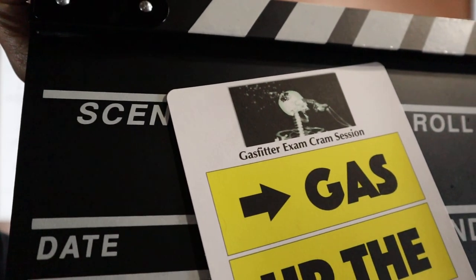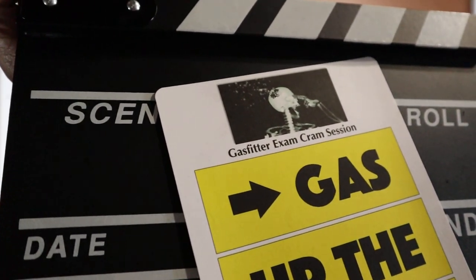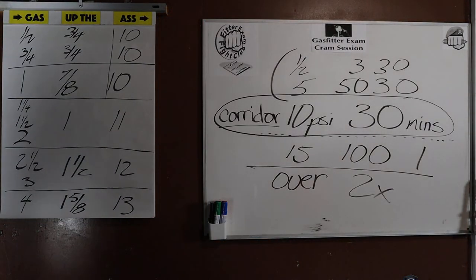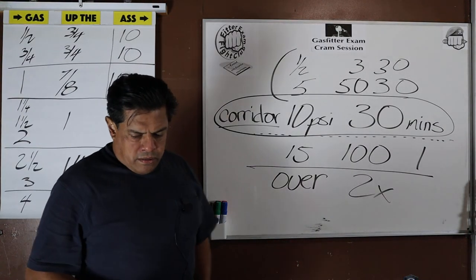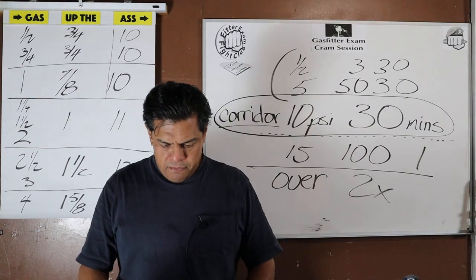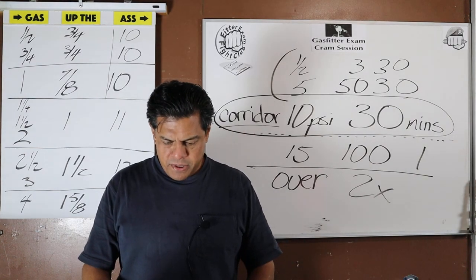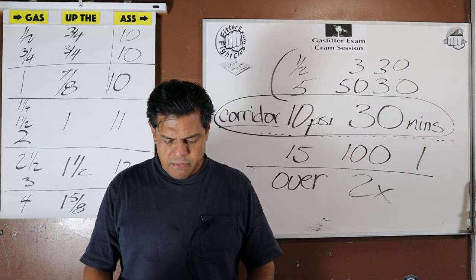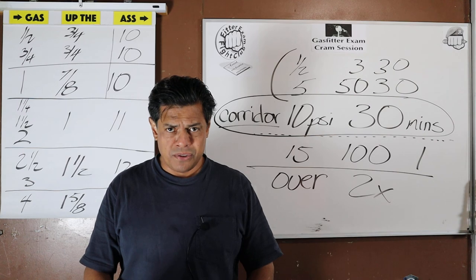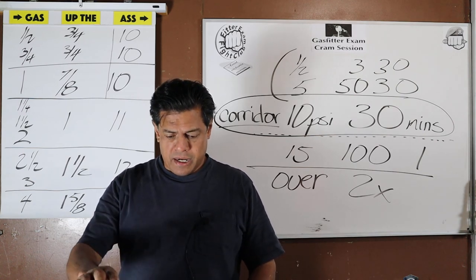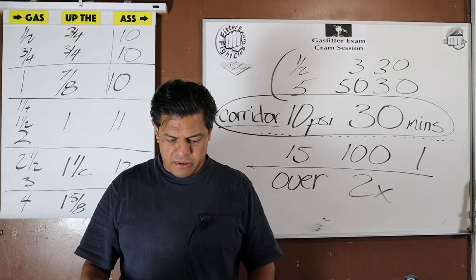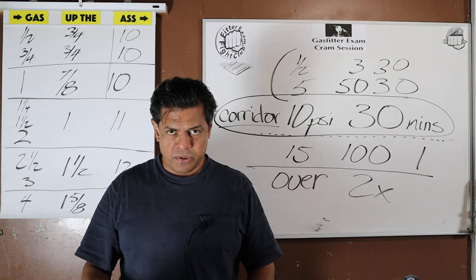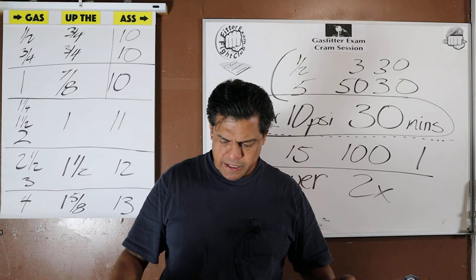Gas fitter exam cram session, video 21. The magic number you've got to remember is 42 inches to the handrail. I got this question — I remember it clear as day — 42 inches high for the handrail.